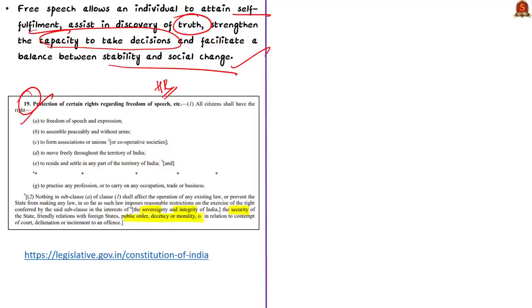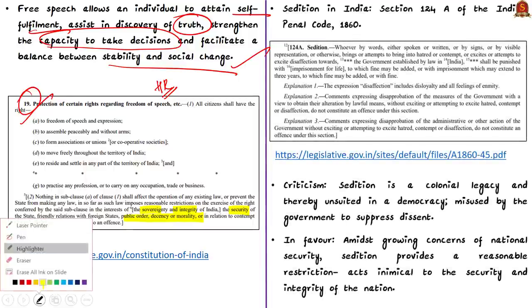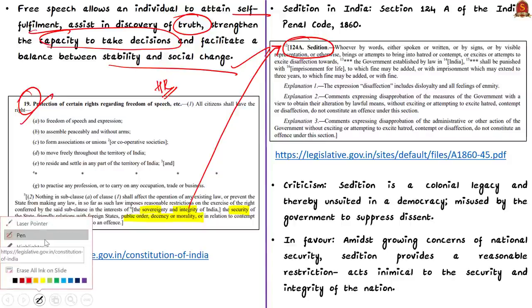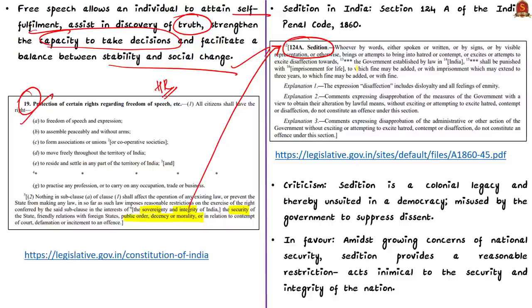Within these reasonable restrictions — sovereignty, integrity, security, public order — the offence of sedition assumes significance. It is provided under Section 124A of the Indian Penal Code of 1860. It says that whoever by words, signs, or visible representation attempts to bring into hatred or contempt, or attempts to excite disaffection towards the government established by law in India, amounts to sedition.